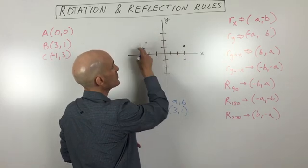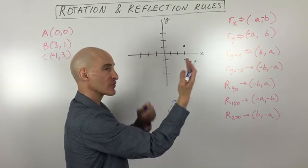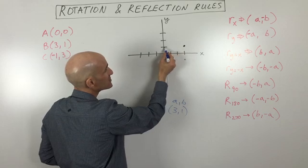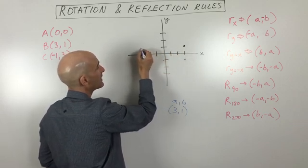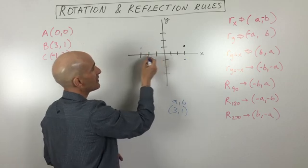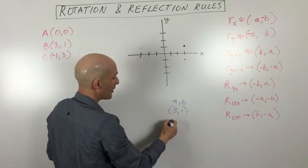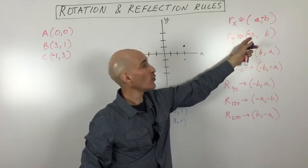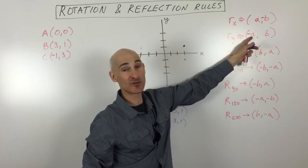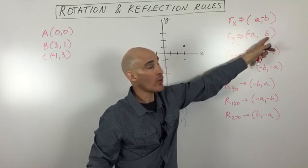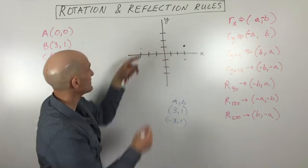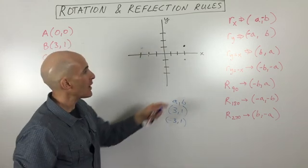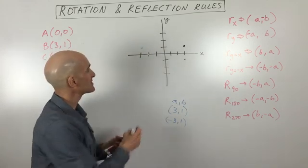Now if you want to reflect it over the y-axis, think of folding over or taking the mirror image over this line. It's like when you stand in front of a mirror — if you're two feet in front, it looks like you're two feet behind. Same thing here: three units to the mirror, then three units behind. The new location is at (-3, 1). When we reflect over the y-axis, the x-coordinate becomes the opposite sign, but the y-coordinate stays the same.